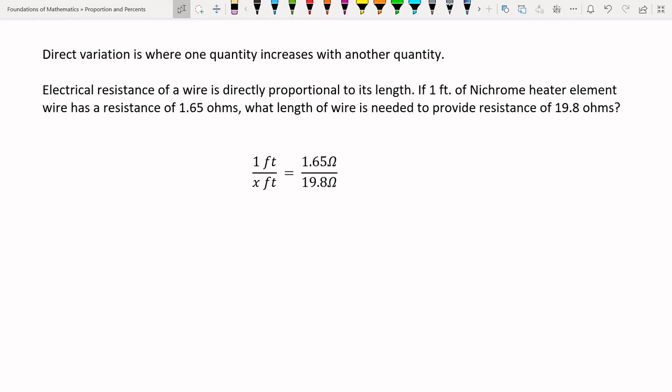When one quantity increases, the other quantity increases as well. This problem says electrical resistance of a wire is directly proportional to its length. The more wire, the more resistance. The less wire, the less resistance. If we have one foot of nichrome, a heater element wire that has resistance of 1.65 ohms, so one foot goes to 1.65 ohms. The omega there, the Greek letter omega, is the unit for ohms. What length of wire, or X lengths of wire, is needed for 19.8 ohms? X goes to 19.8.